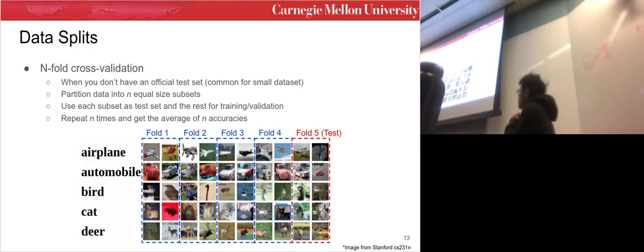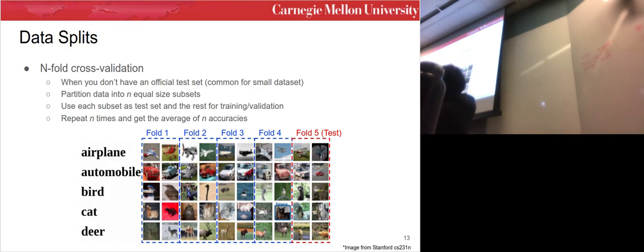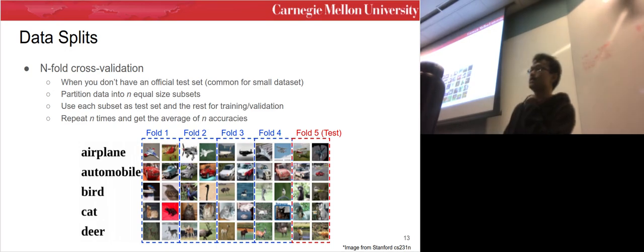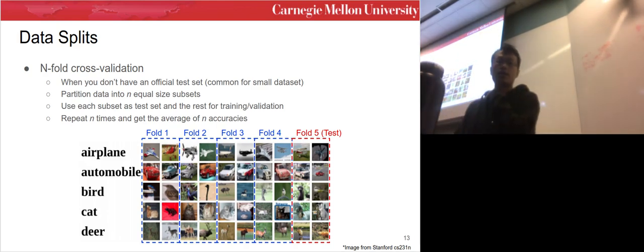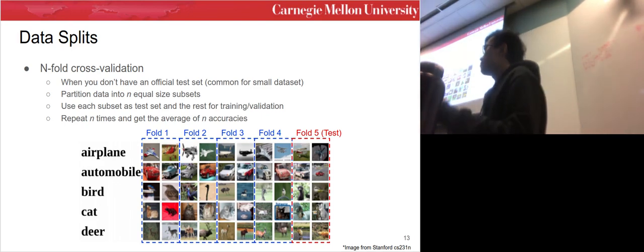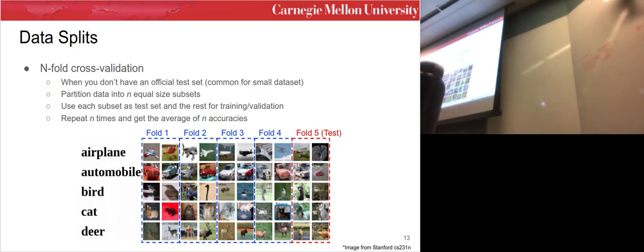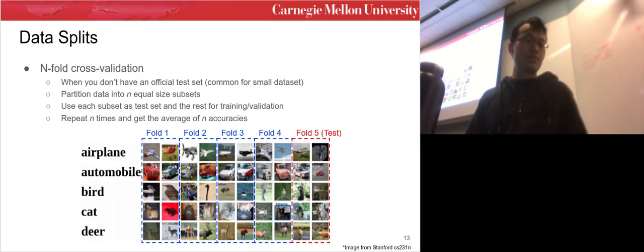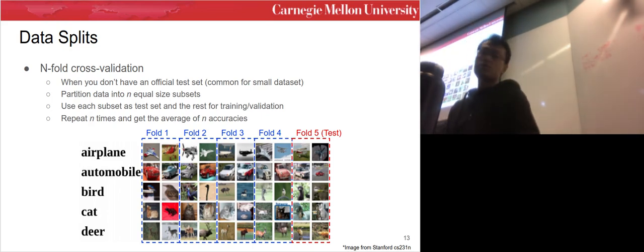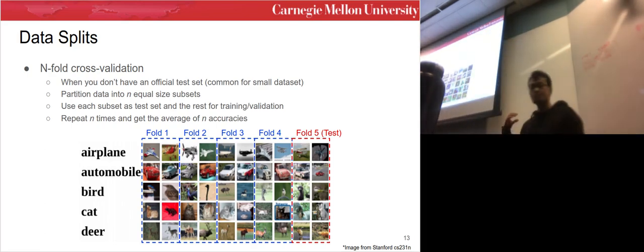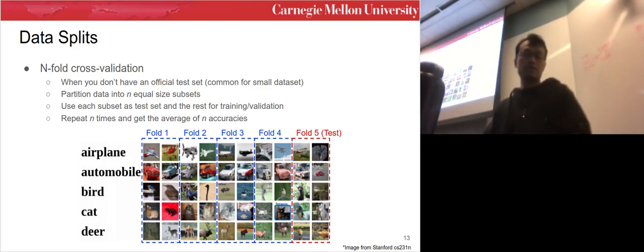In cases where you don't have a lot of data, people use five-fold cross-validation: partition the data into five equal-size chunks. For example, with five classes and ten images per class, you train on folds one through four and test on fold five, then repeat five times and average the accuracy across all five experiments. This is common in data science settings with limited data.